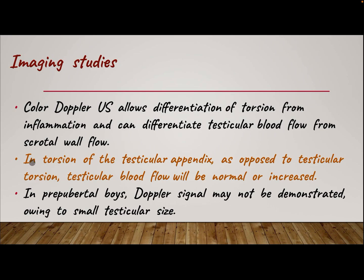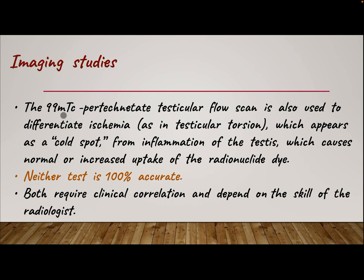Imaging studies. Color Doppler ultrasound can differentiate torsion from inflammation and can differentiate testicular blood flow from scrotal wall flow. In torsion of the testicular appendix, as opposed to torsion of the testis, testicular blood flow will be normal or increased. In prepubertal boys, Doppler signal may not be demonstrated owing to small testicular size. Technetium-99 testicular flow scan is also used to differentiate ischemia — as in testicular torsion, which appears as a cold spot — from inflammation, which causes normal or increased uptake of the radionuclide. Neither test is 100% accurate; both require clinical correlation and depend on the skill of the radiologist.